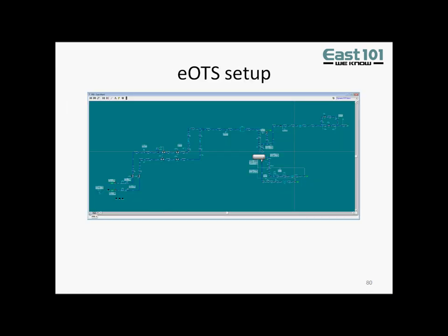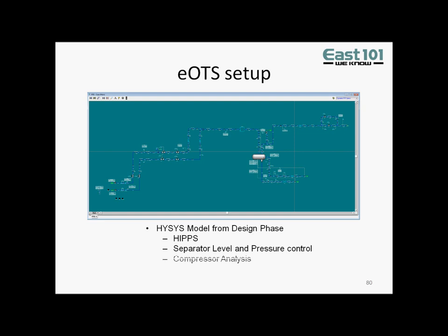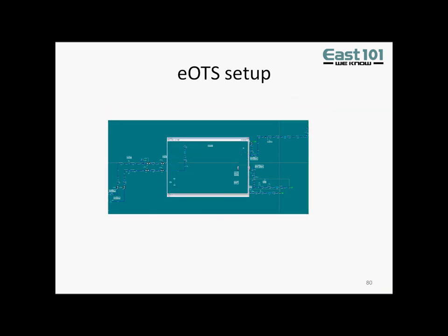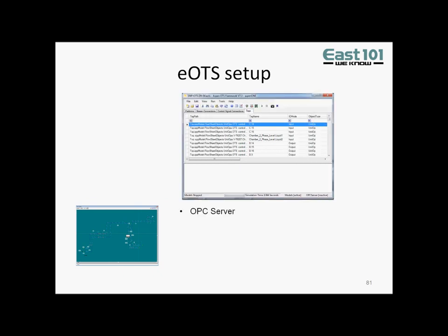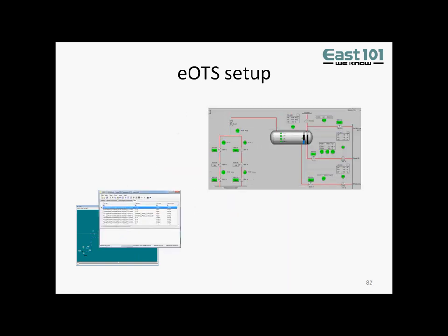Here's how the EOTS was set up. We start with a dynamic simulation model. This example shows a HISIS simulation used in the design phase for several analyses — for example, a HIPPS study involving blocked outlet, a separator level and pressure control study involving severe slugging, and a compressor analysis involving emergency shutdown. As you can see, the simulation may cover a wide range of operations. However, this is not seen by the EOTS end user. On top of the simulation is an OPC server, which connects to HISIS and exposes tagged variable values to OPC-compliant software. The OPC server links HISIS and the Human-Machine Interface. The role of HMI is fulfilled by an OPC-aware graphical user interface that can be freely customized so that it looks familiar to operators and is easy to use.